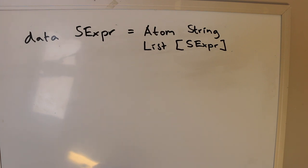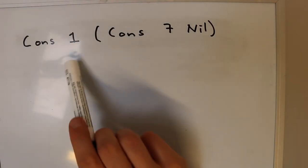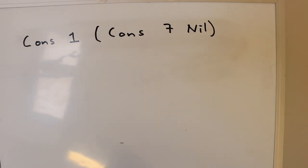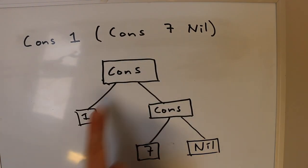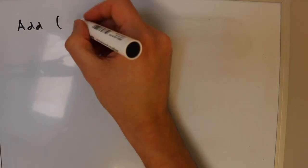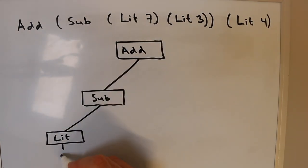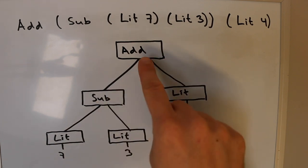Let's look at some concrete examples for these recursively defined types. For a list, an example is Cons of 1 and another list, which is Cons of 7 and Nil. We can also draw this as a picture: Cons of 1 and another list, Cons of 7 and Nil. For the expression language, we can similarly draw a picture: an Add of a Sub of Lit 7 and Lit 3, and on the other branch of the Add, a Lit 4.